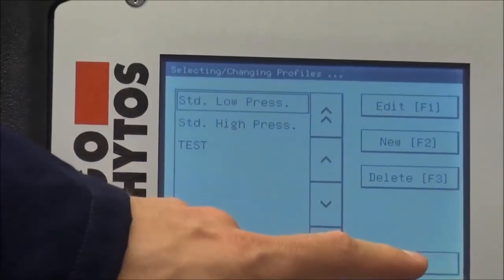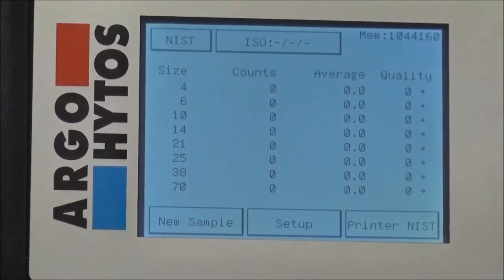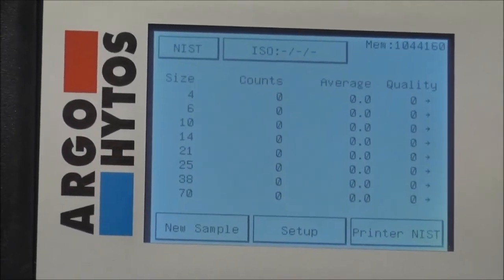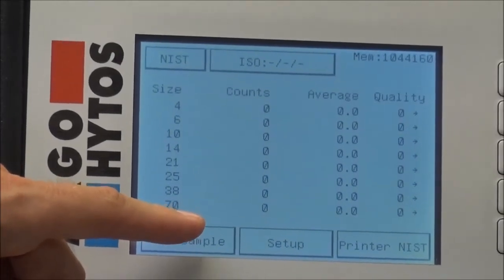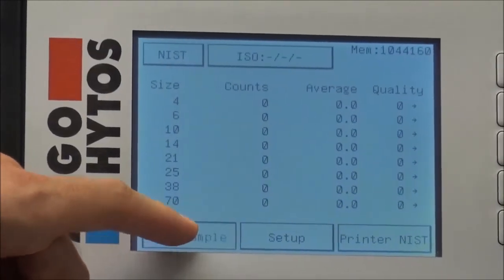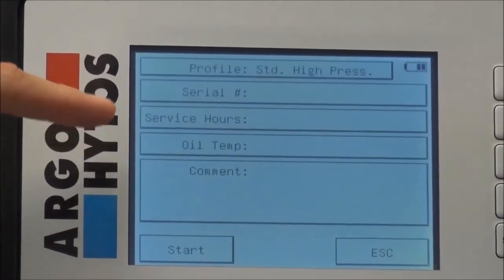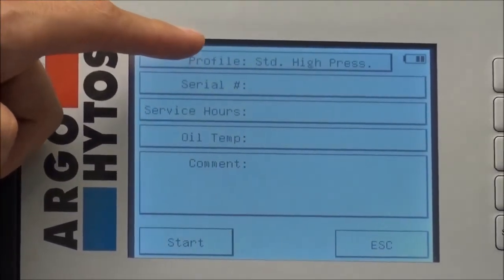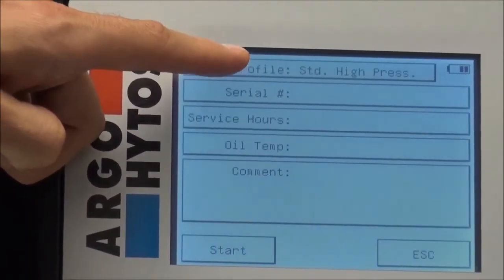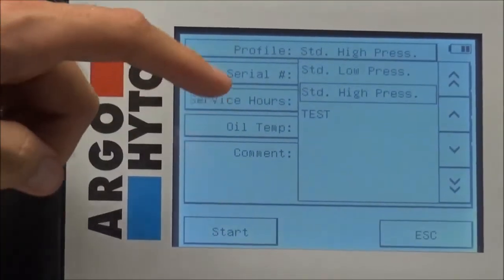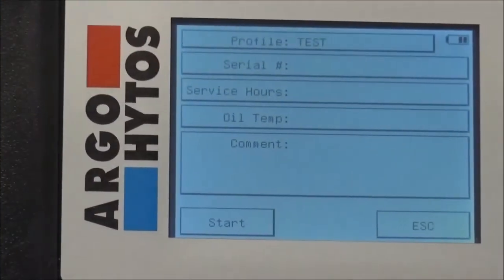To return to the measurement menu where we can now start our measurement you press one time OK and we want to select now that a sample is created. So new sample is the button to start a measurement and here you have different things you can choose. First of all you see on top the profile there is the standard profile high pressure that has been used the last time but we created a new one. So we choose our new created test profile and now you selected that one.